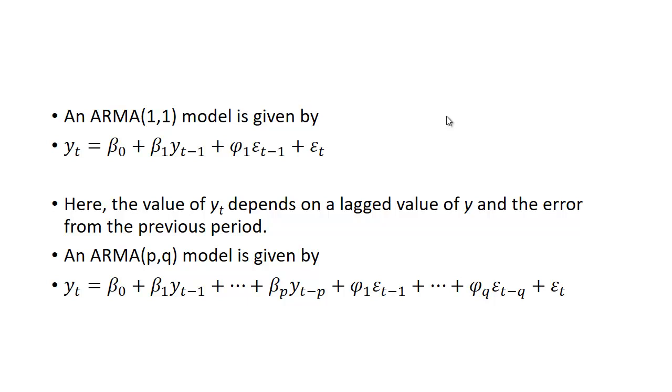You can have a much more general model, which we'll call ARMA(p,q), where p is the number of lags on the autoregressive part and q is the number of lags on the moving average part. Here we would have that same constant β_0, plus β_1*y_(t-1) + β_2*y_(t-2) all the way out to p lags, β_p*y_(t-p). Then you would have φ_1 times the error in the previous period, plus φ_2 times the error two periods lagged, all the way out to φ_q times the error lagged q periods, plus an error term at the end.